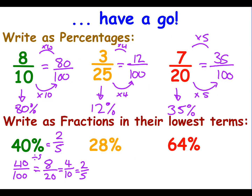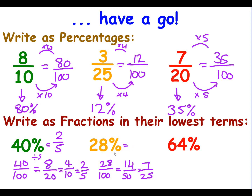For 28%: 28% means 28 over 100. I can see 2 divides into both, giving 14 over 50. Then 2 divides into both again, giving 7 over 25. 7 is a prime number and doesn't go into 25, so I can stop there. So 28% is the same as the fraction 7 over 25.